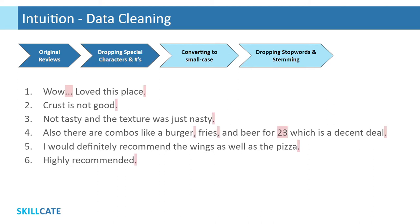Firstly, as you may see, we have dots and commas as special characters here, which strictly speaking do not tell us whether a review is good or bad. Even the numbers, as is the case in this fourth review here, are not telling us anything on the sentiment behind the statement. So let's drop these special character values.